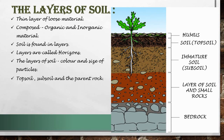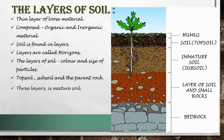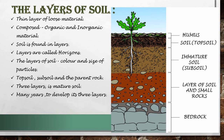The main layers of soil are topsoil, subsoil, and the parent rock. The parent rock is also called bedrock. Each layer has its own characteristics, and these features play a very important role in determining the use of the soil. Soil that has developed three layers is called mature soil. It takes many years under favorable conditions for soil to develop three layers. At some places, soil contains only two layers — such soil is called immature soil.